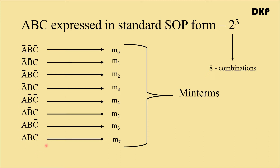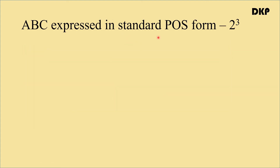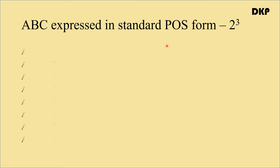In these three variables A, B, C — A is called the most significant bit or MSB, and C is called the least significant bit or LSB. In the standard POS form, the eight combinations are: A plus B plus C; A plus B plus C bar; A plus B bar plus C; A plus B bar plus C bar; A bar plus B plus C; A bar plus B plus C bar; A bar plus B bar plus C; and A bar plus B bar plus C bar.